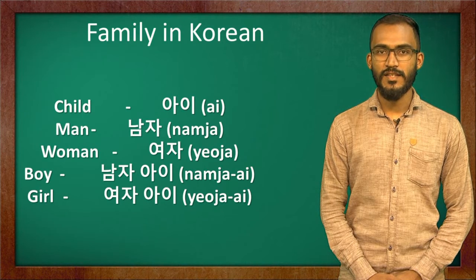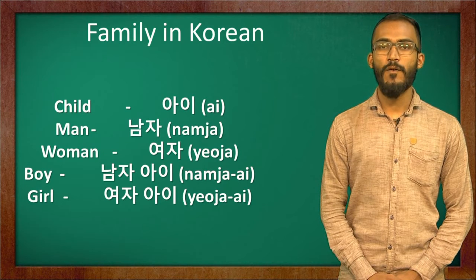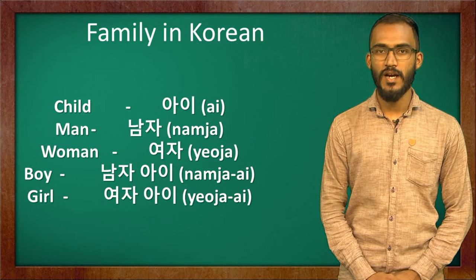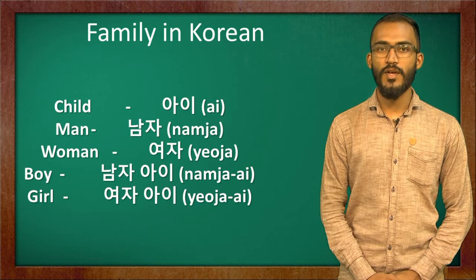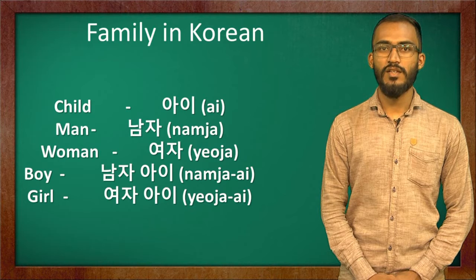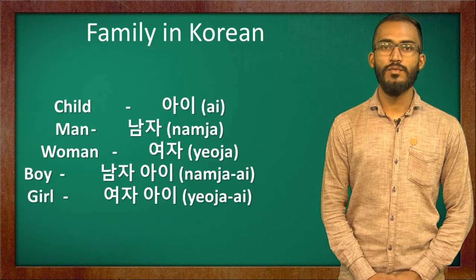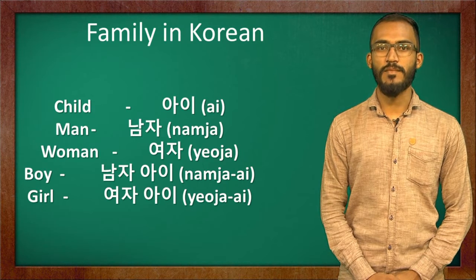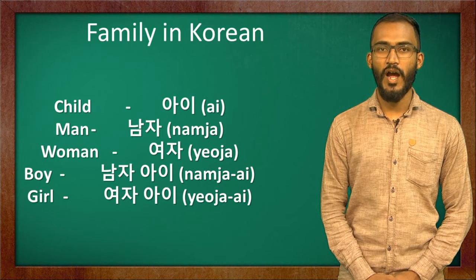For child, we call it 아이. 아이 is the word for child. The word for men is 남자. 남자 is the Korean word for men. The Korean word for women is 여자. 여자 is the Korean word for women. If I want to say boy, boy in Korean is 남자 아이. And girl is 여자 아이.